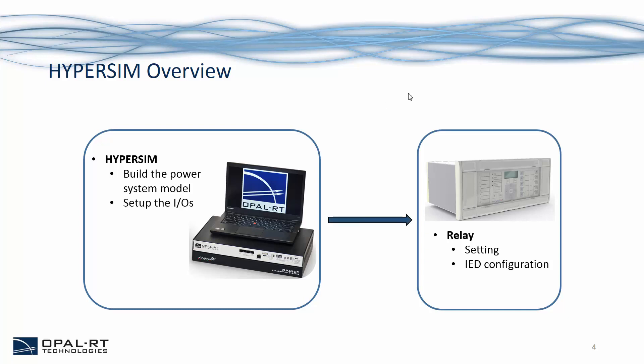The next step is determining the interface between the simulator and the device under test. We could use either analog or digital signals, or we could use IEC 61850 sample values and GOOSE messaging. After configuring the IOs, we can start the real-time simulation.